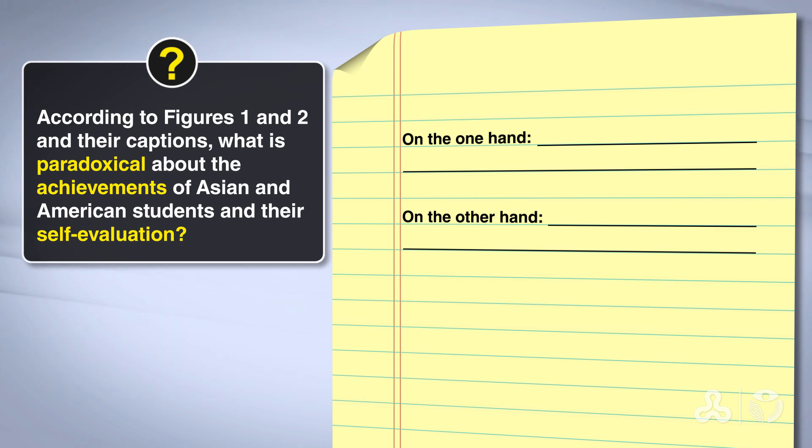Now, let's answer. On the one hand, Asian students do much better than American students. On the other hand, Americans are more satisfied with their performance than Asians. You can word the answer differently, as long as you see the contrast here between satisfaction and achievements.